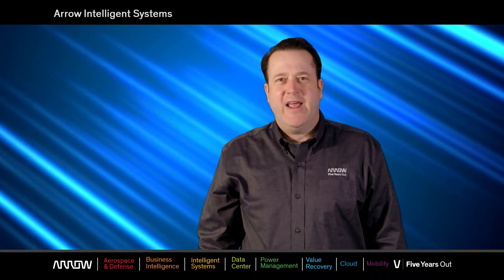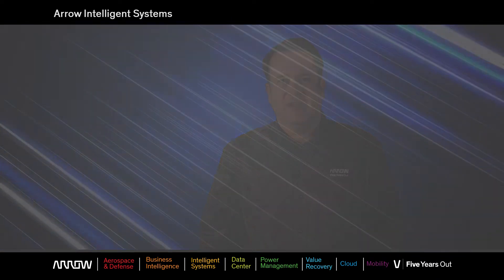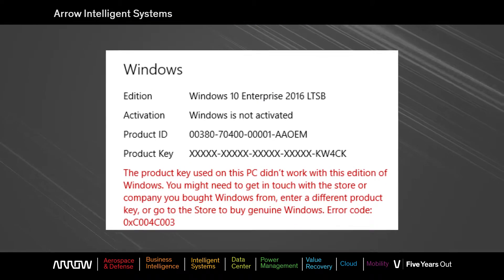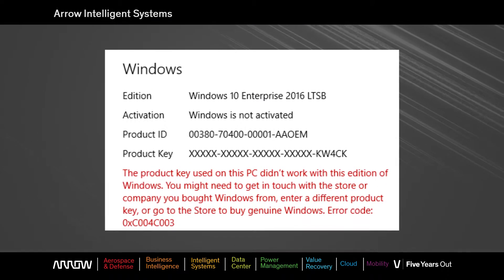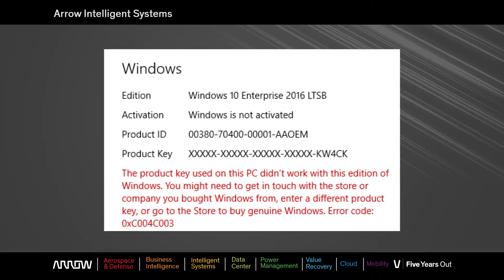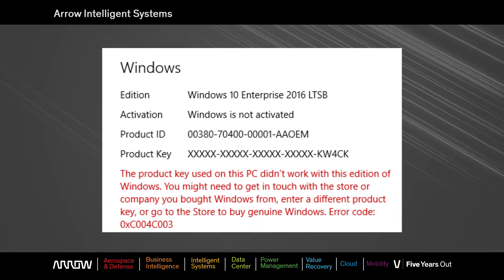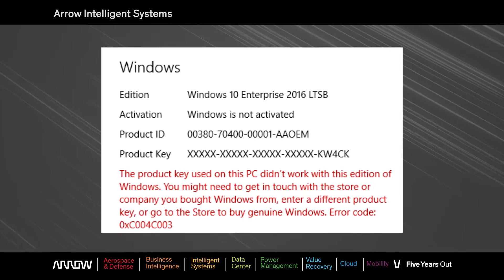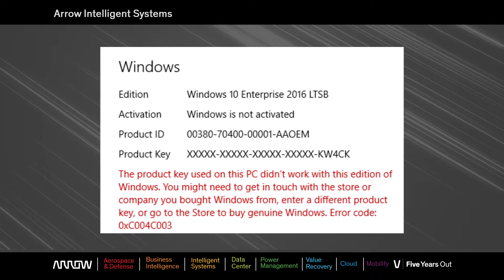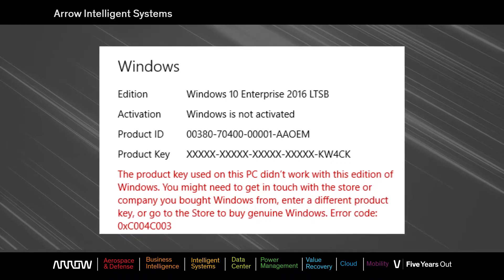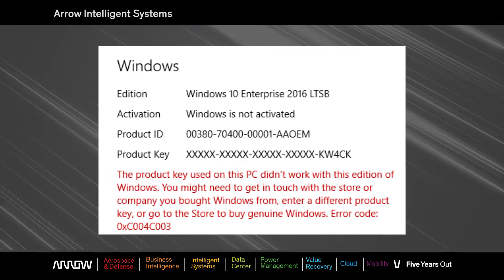These staging keys are also published on the internet and are typically not protected because they are blocked from activation. If you find that your system is failing activation or receiving an error in reference to the key being blocked, you have probably used a staging key and will need to change it to a production key.